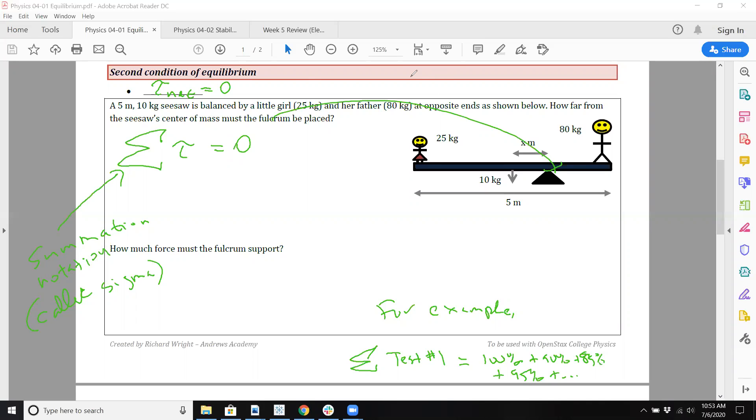I'm going to change colors here, I'll go red. So it's going to be torque of the girl, plus the torque of the father, and all that's supposed to equal zero.